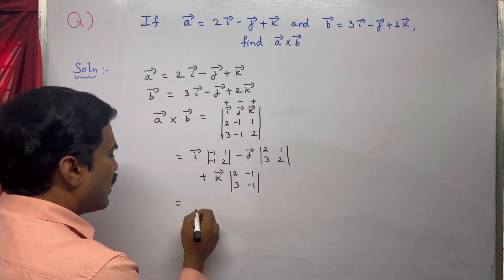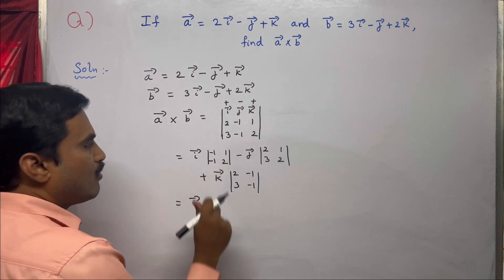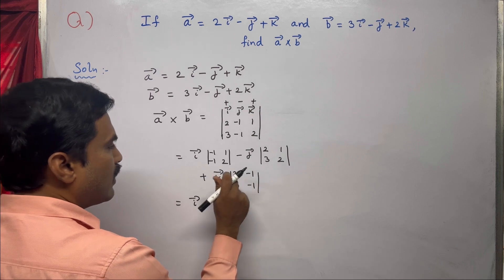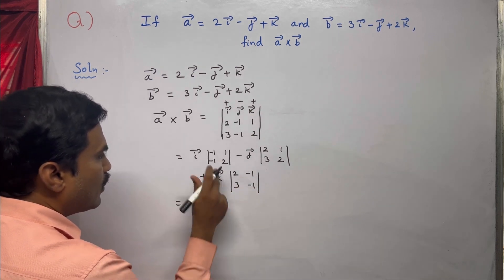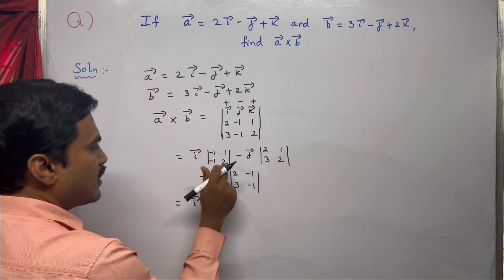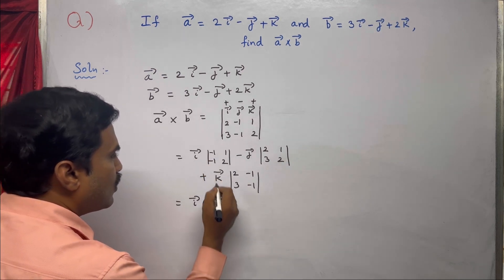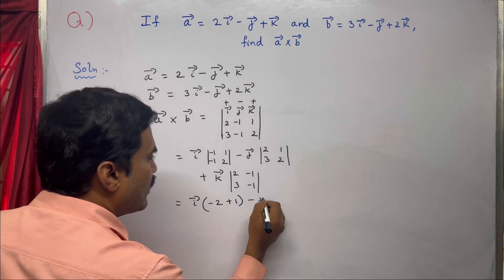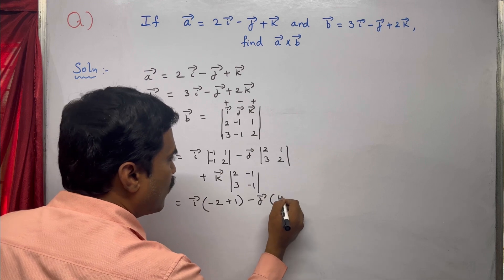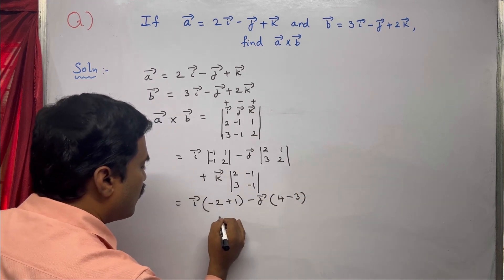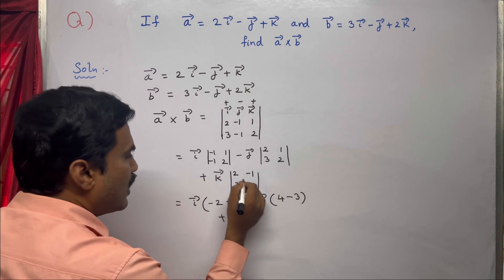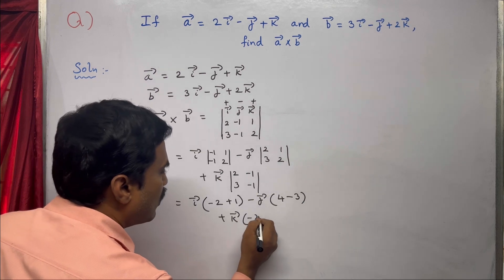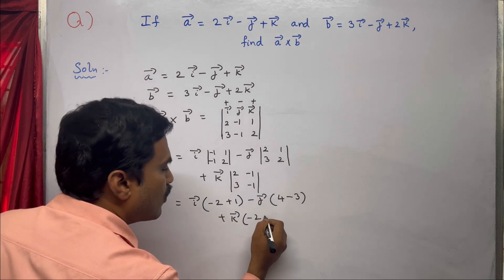Now simplify. For i̅: multiply the main diagonal elements — (−1)(2) = −2, then minus (1)(−1) = +1. For minus j̅: (2)(2) = 4, then minus (3)(1) = 3. For k̅: multiply main diagonal — (2)(−1) = −2, then minus (3)(−1) = +3.